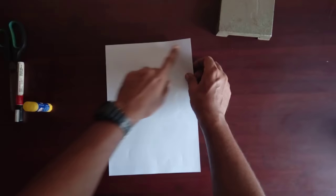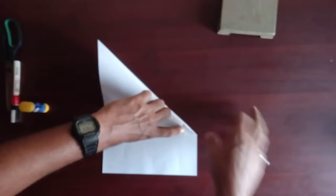Now take one A4 size paper and bring the shorter side over the longer side and cut off the extra sheet. In this way, you will get a square.